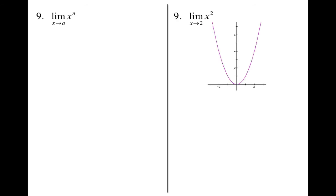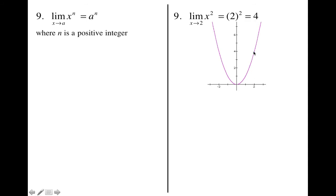Our next property is the limit as x approaches a of x to the nth power. Looking at the example with x squared as x approaches 2 — here's 2, x is approaching from the left and the right, and the graph approaches 4. So we get 2 squared, which gives me 4. In general, we have a to the nth power, where n is a positive integer.